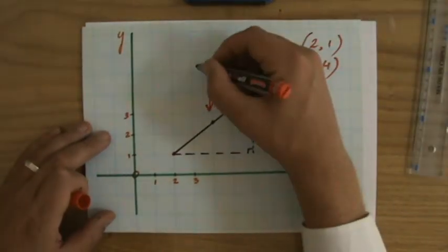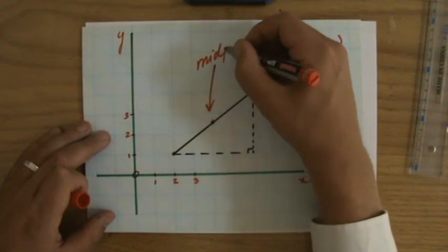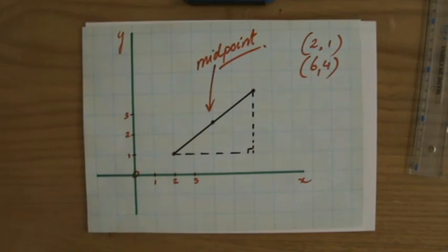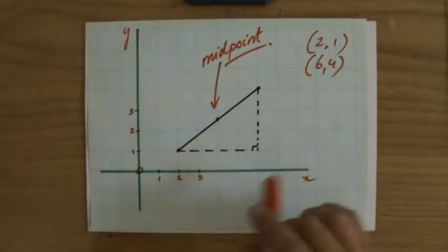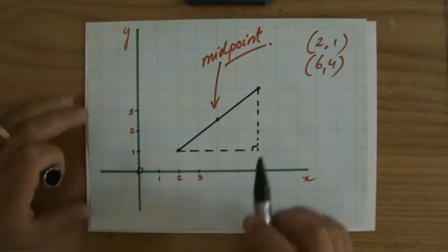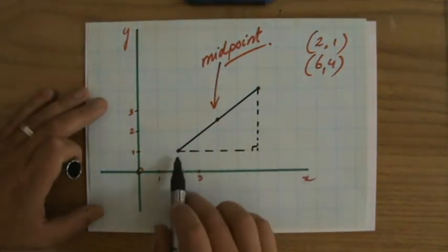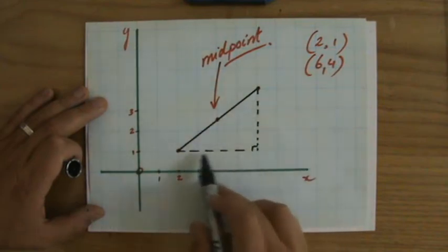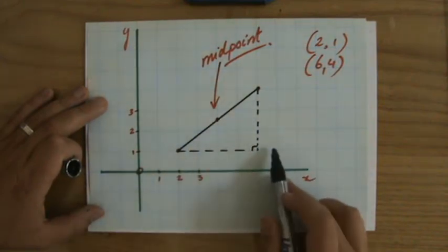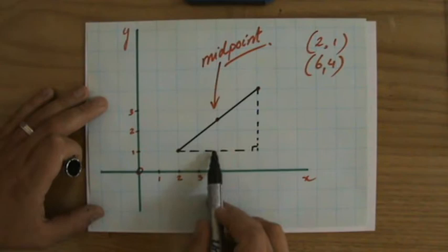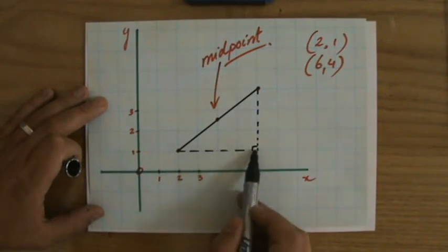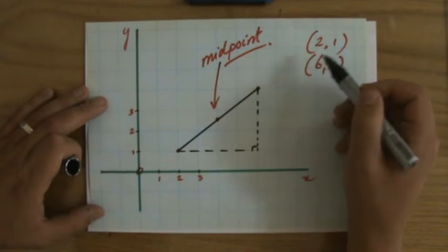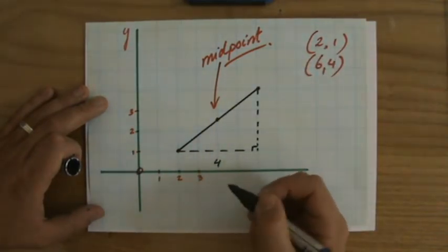Now let me write that down. That would be the midpoint. However, we have to calculate it, because that is of course far more accurate than if I measure it with a ruler. Now let's have a look. What is the length of this side? Because I created a right angle triangle again. What is the length of that side? Well, it's 1, 2, 3, 4 blocks long. So the horizontal length is 4, from 6 to 2 in the x direction. So that is 4 blocks long.